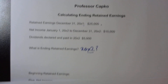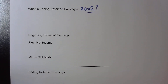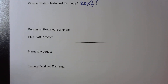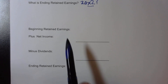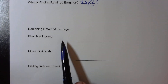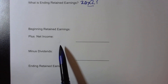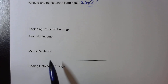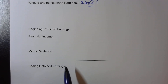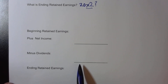The way we're going to figure it out: we look at beginning retained earnings, add the net income, subtract out any dividends, and that gives us our ending retained earnings.